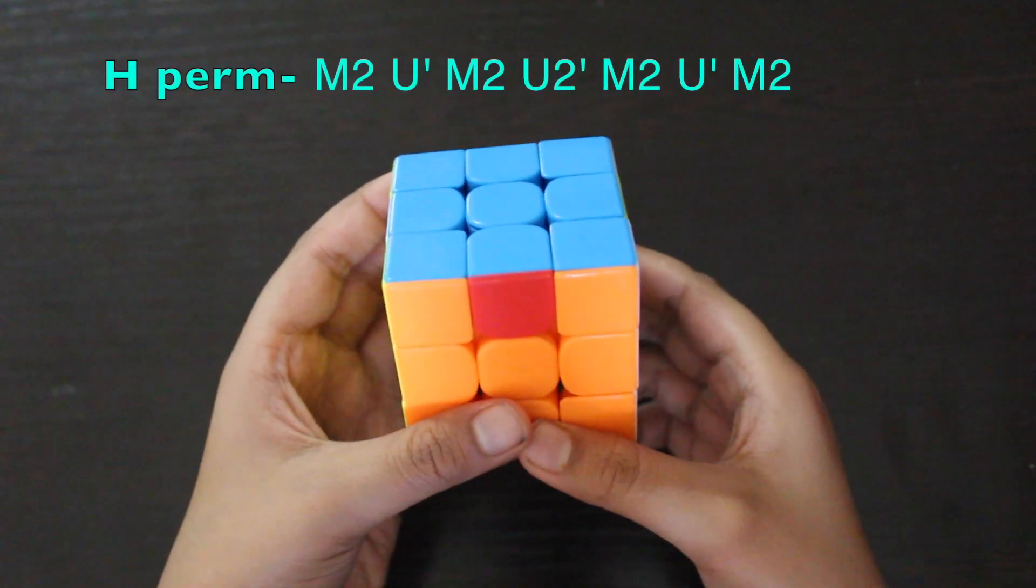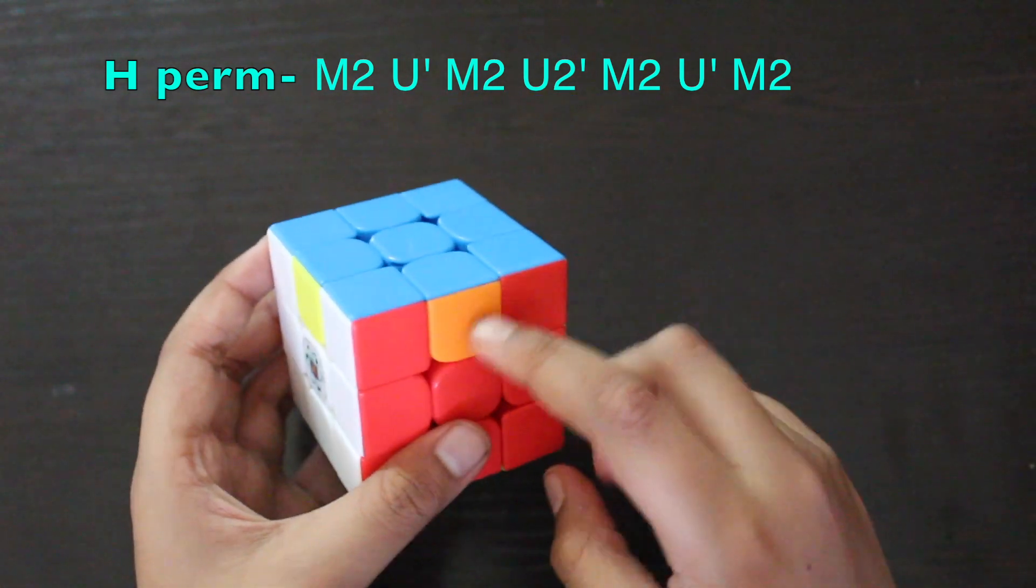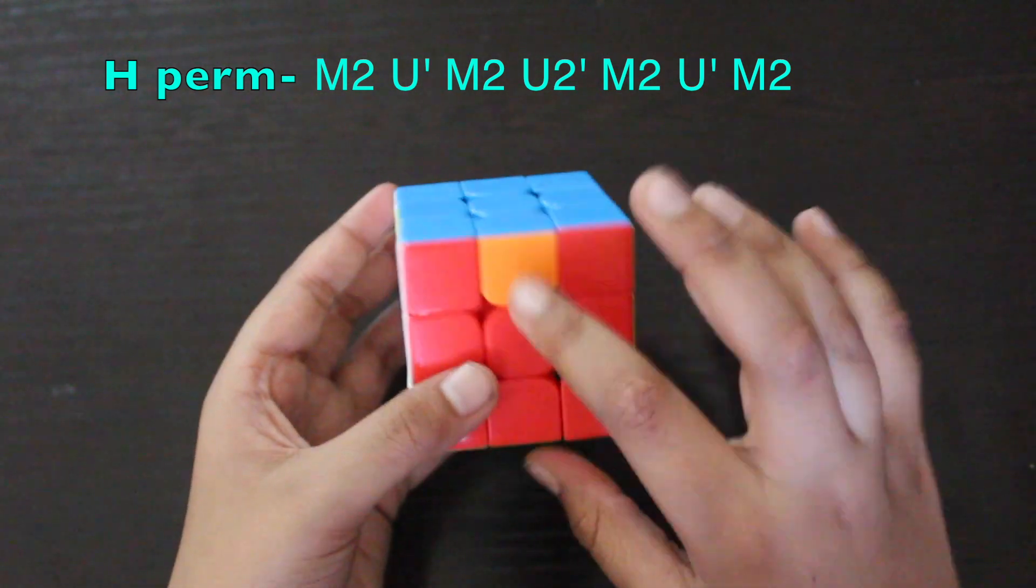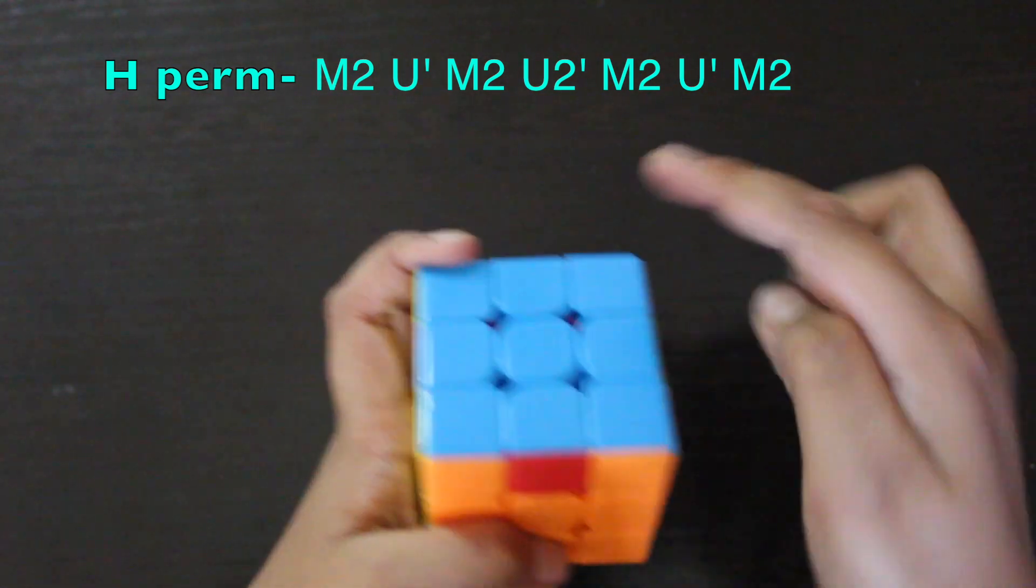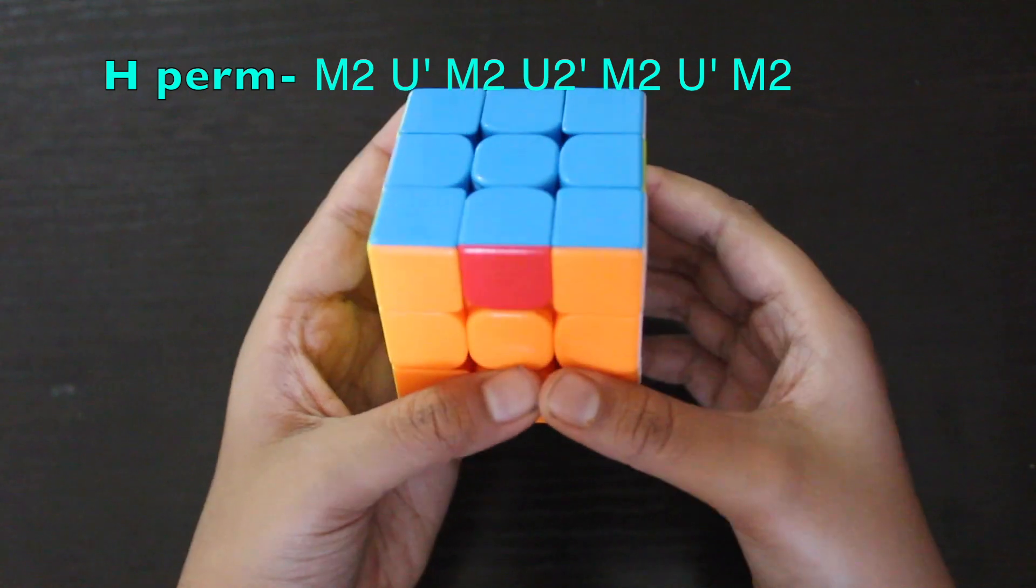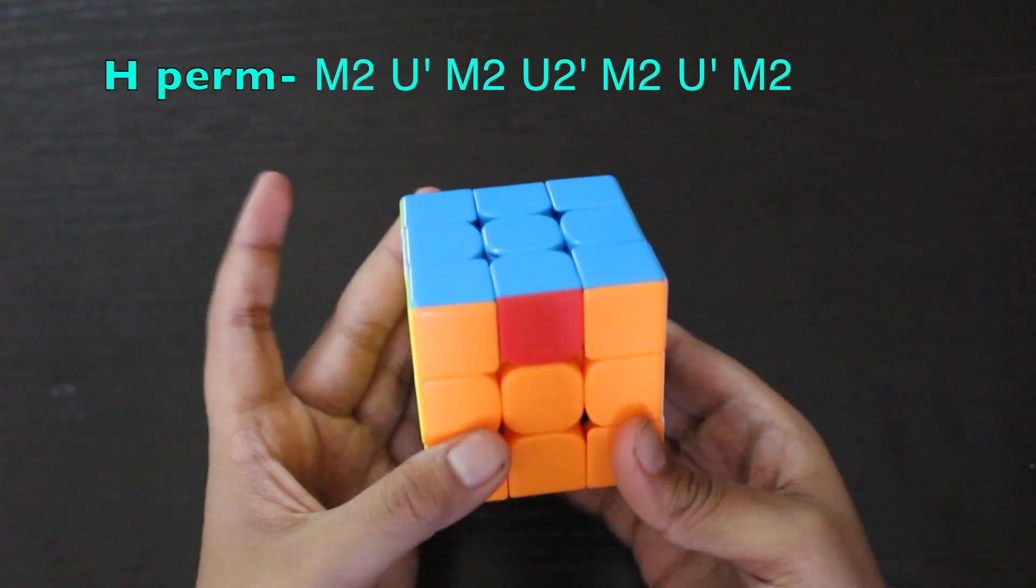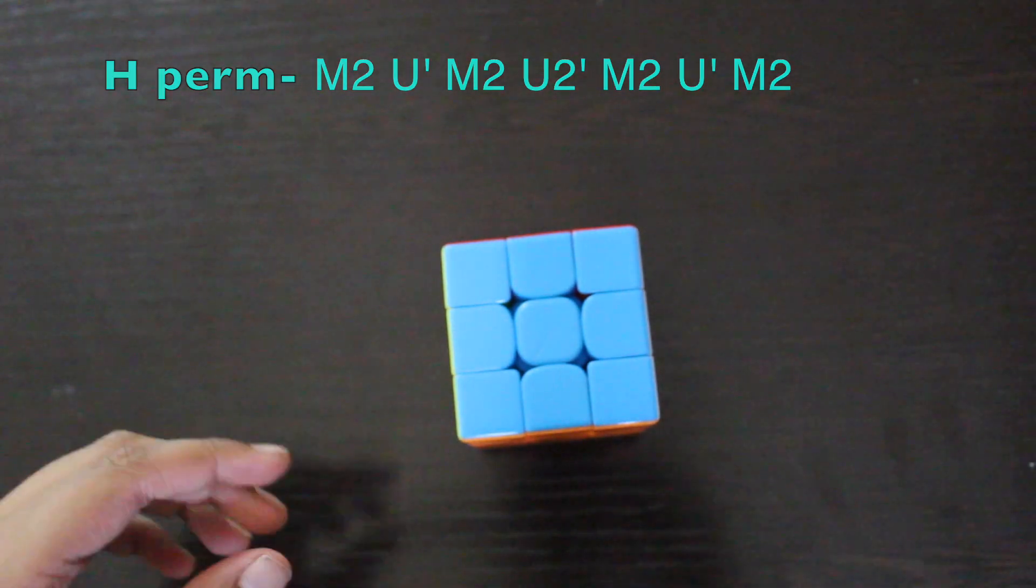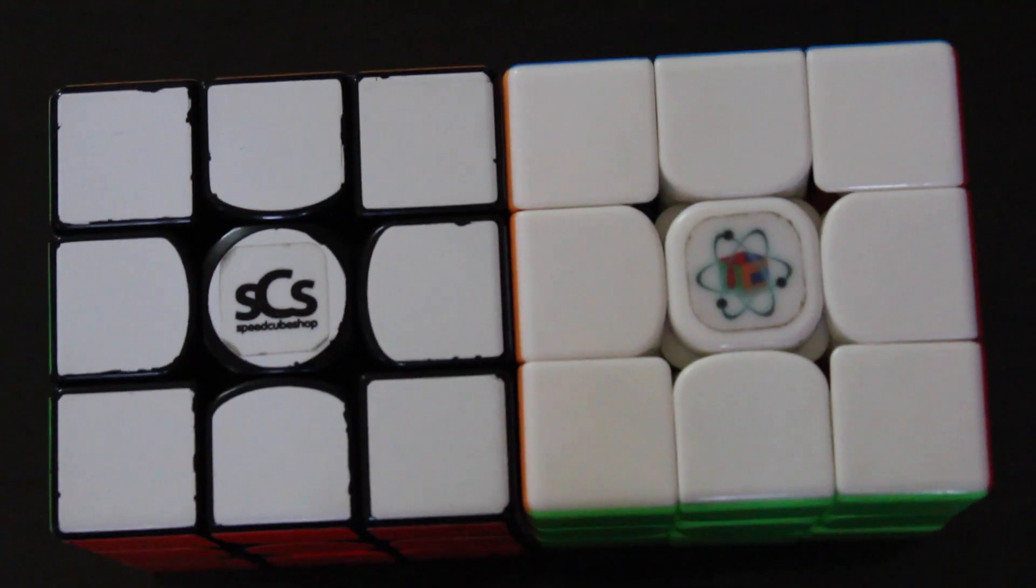The last case but not the least is the H perm. This is my favorite EPL to execute. In this algorithm, the edges get swapped towards the opposite side - like this is red and this is orange at the back, this is orange and this is red. So the edge will move towards here and this towards here. I like this case because you can hold it in any way you want and you can execute it very fast. It's like this. Now in slow motion.